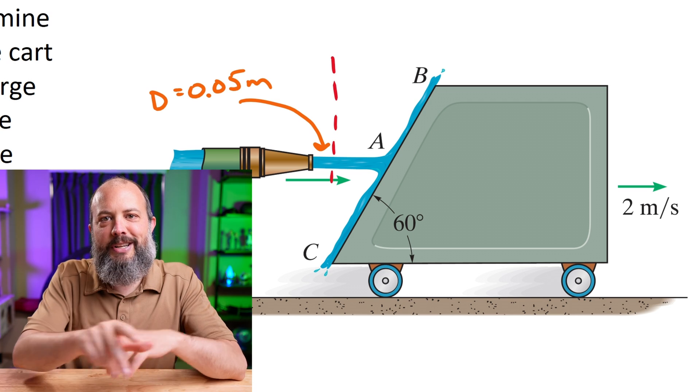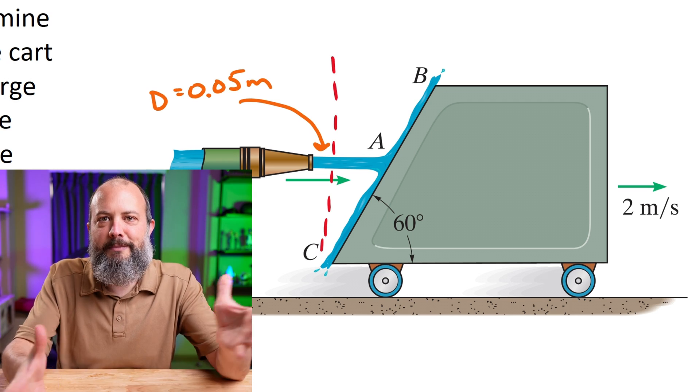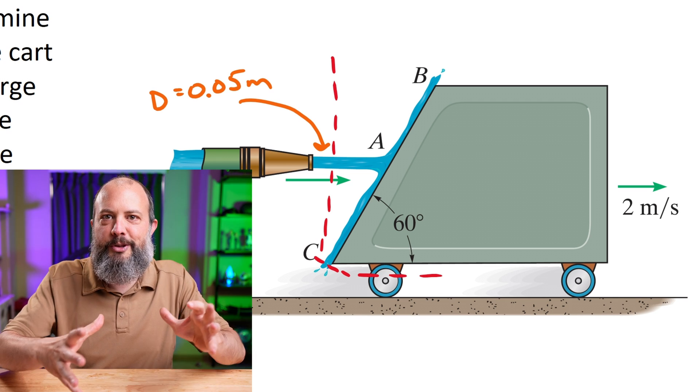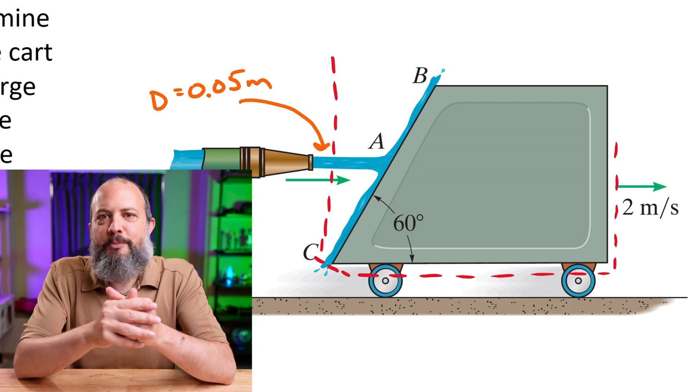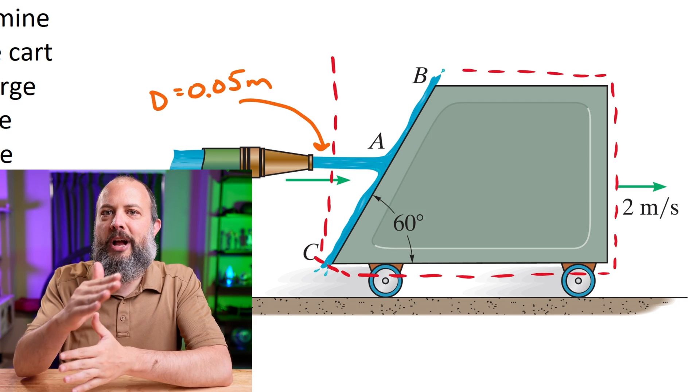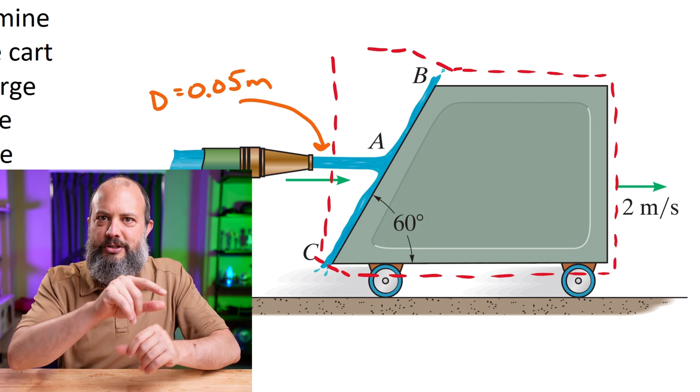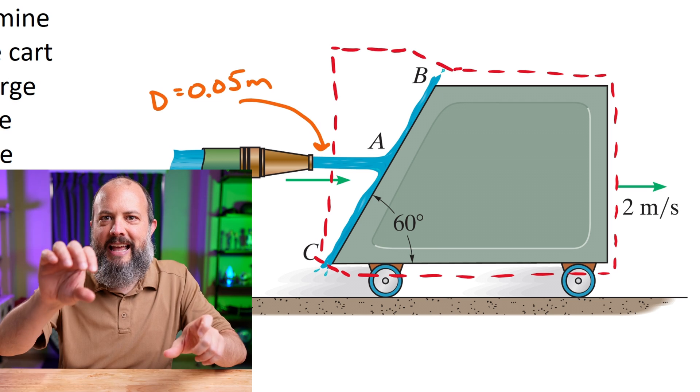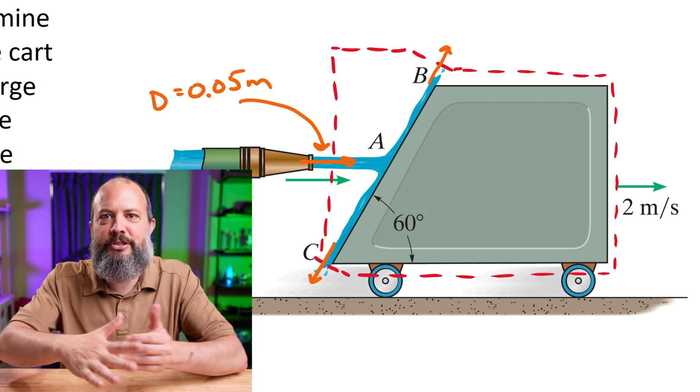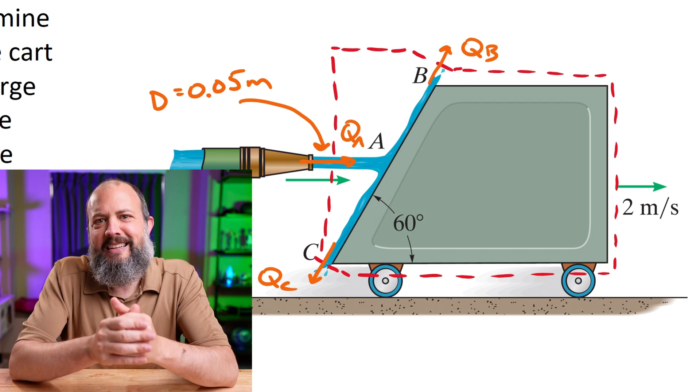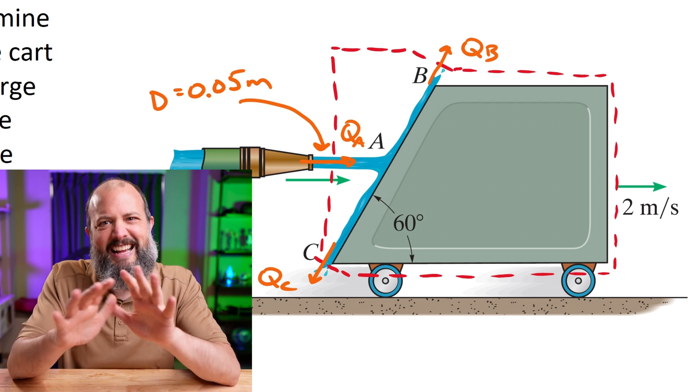On my drawing, I'm adding a dashed line to indicate the control volume. I'm just including the cart and also the part of the water that's hitting the cart. But I'm being very particular to make sure I draw my control volume a little bit crooked so that everywhere that water enters and exits, it is perpendicular to the direction of the control volume. It doesn't seem like it should matter, but it kind of actually does.